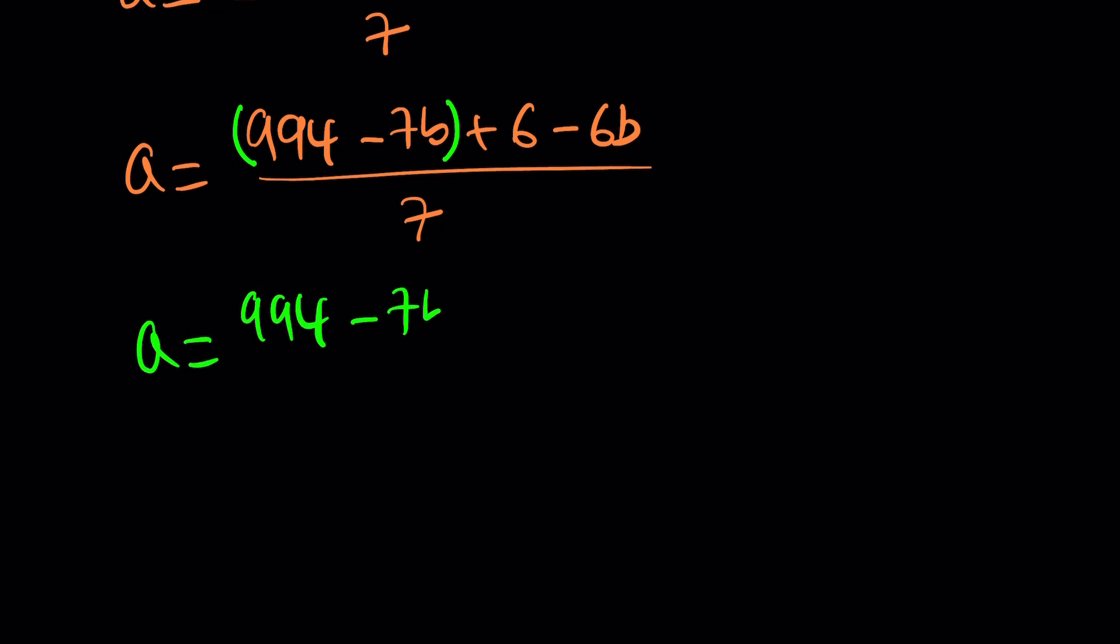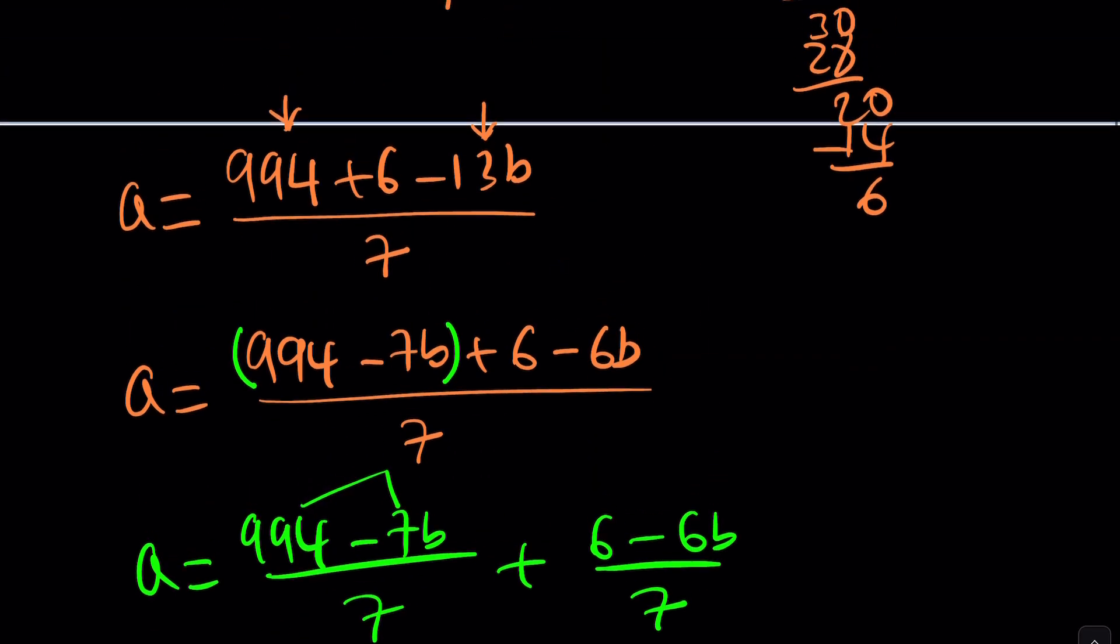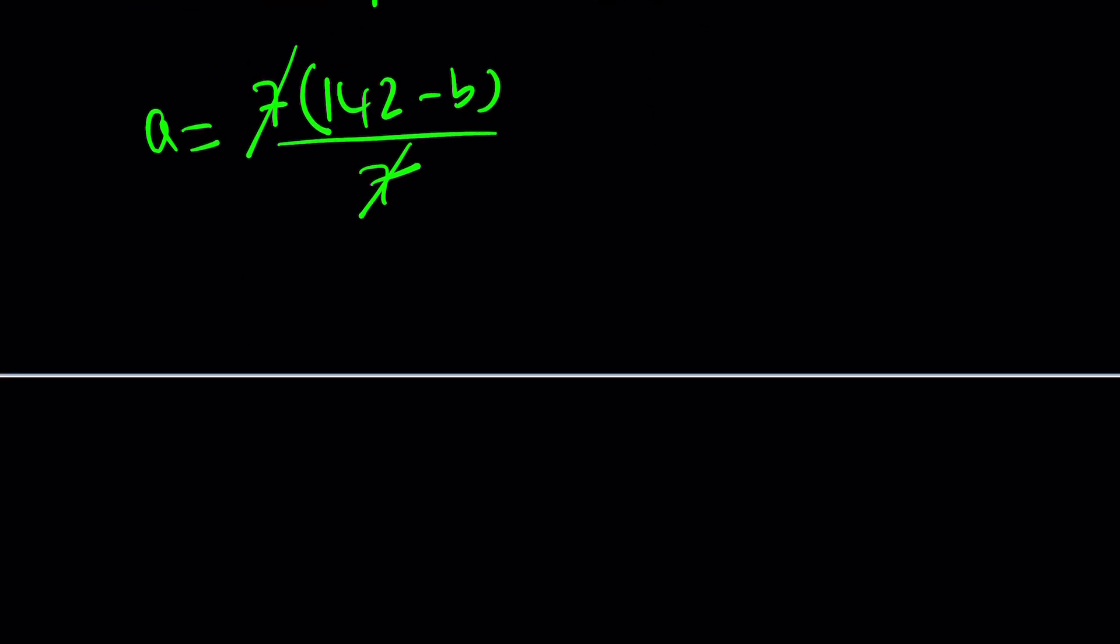We're ready to split it up, because this part is divisible by 7. We're going to factor out a 7 here, since 994 is 7 times 142. It's going to be 142 minus B. The 7s are going to cancel out, leaving us with something integer. A and B are positive integers. Therefore, 142 minus B is an integer. A is an integer, so the remaining piece also needs to be an integer.